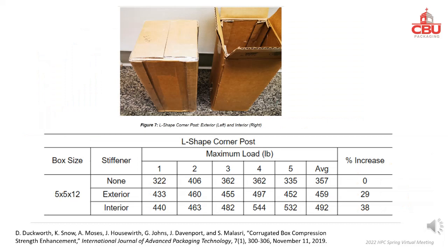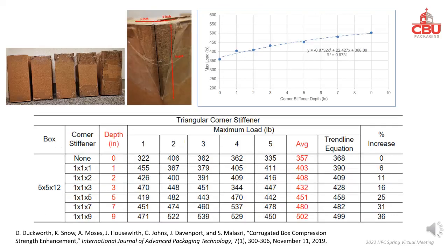This slide shows another way to strengthen box corners using L-shaped corner posts. The interior corner post yields better strength. Another slide shows yet another way to strengthen box corners using triangular corner stiffeners. The longer the depth of the stiffener, the higher the box strength.